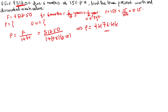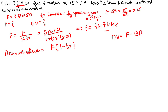The second question is discounted value — that means cash obtained after discounting by the bank. The discounted value formula is equal to F × (1 minus t×r). One more formula is discounted value equals face value minus banker's discount, but banker's discount is not given here. So apply the formula: discounted value equals F × (1 minus t×r) equals 512.50 × (1 minus 0.5 × 0.15).